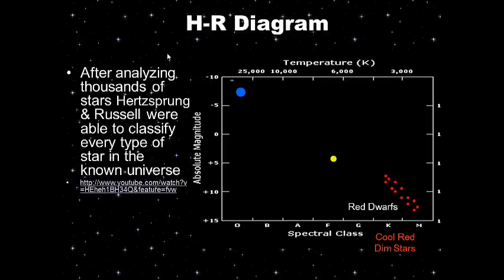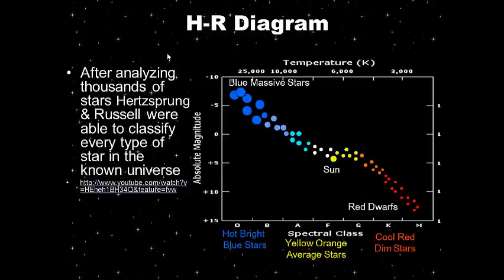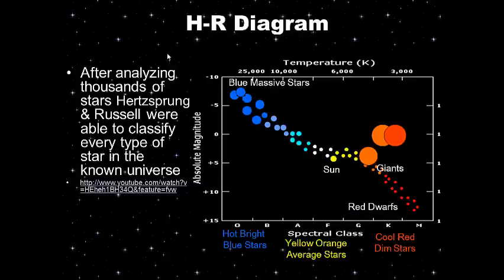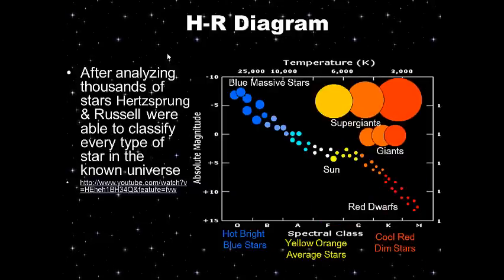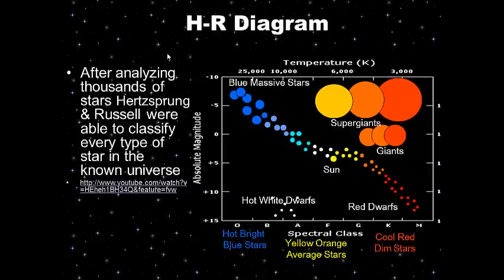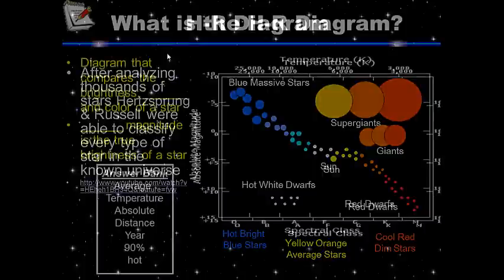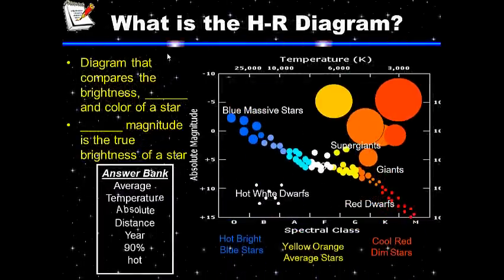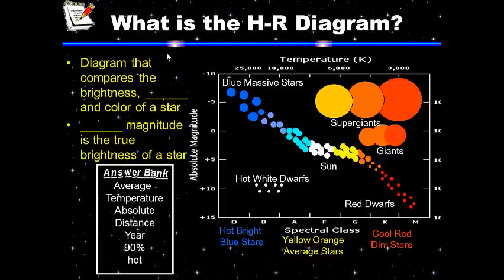The diagram includes cool red dim stars, yellowish-orange stars, white stars, massive blue stars, giants, supergiants, and hot white dwarfs — all of which we'll learn about later. For your notes on what the HR diagram is, use the answer bank to fill in the blanks. Go ahead and pause while you write.